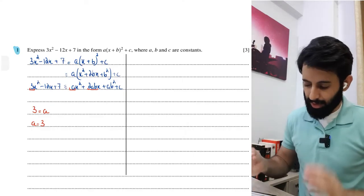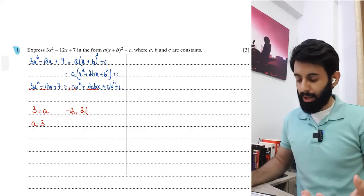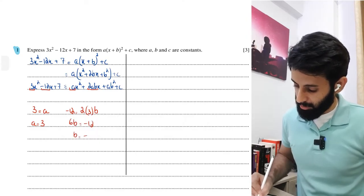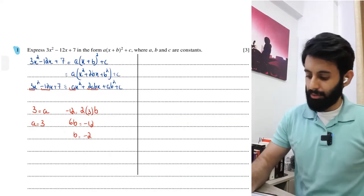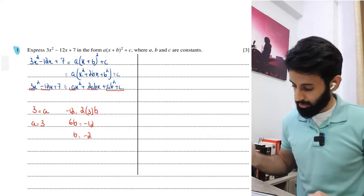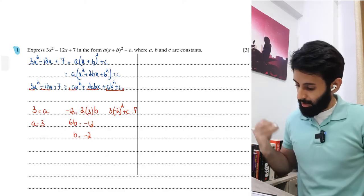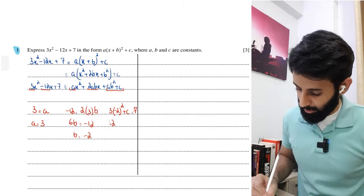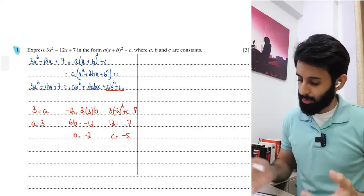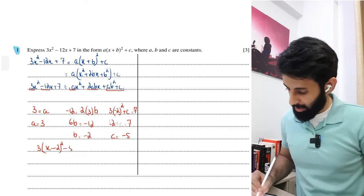Once you have the values a = 3, b = -2, c = -5, put them back into a(x + b)² + c. The result is 3(x - 2)² - 5, which is the correct answer. That was the comparing coefficients method - a reliable approach, though requiring careful steps.